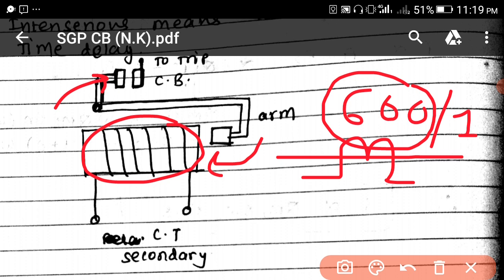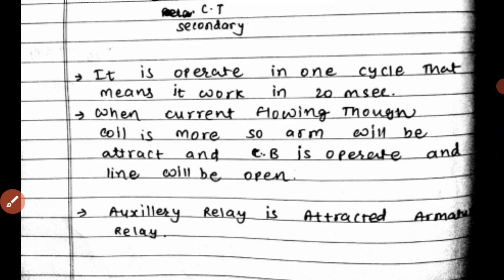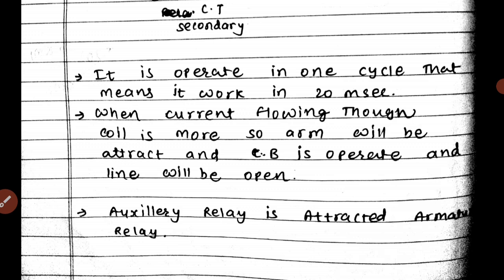It operates in one cycle, that means it works in 20 milliseconds as discussed earlier. When the current flowing through the coil is more, the armature will be attracted and the circuit breaker operates and the line will be open. The attracted armature relay is also used as an auxiliary relay. There are mainly two types of relays — one is main relay and one is auxiliary relay. The auxiliary relay provides backup protection for the main relay.